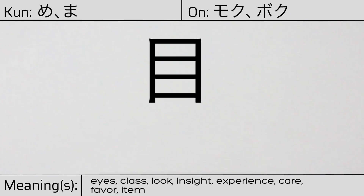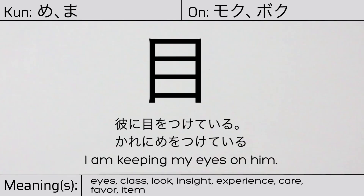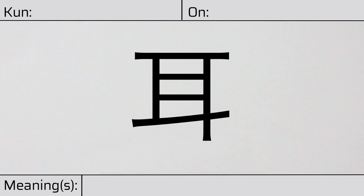Our example sentence is: 彼に目をつけている — I'm keeping my eyes on him.